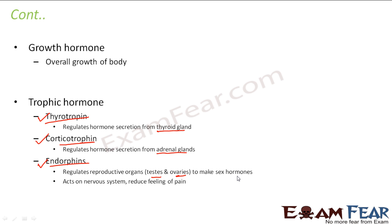Endorphins also act on the nervous system — they reduce the feeling of pain. When we get hurt, we feel a lot of pain, and that feeling is controlled by endorphins. Excessive feelings of stress and depression can also cause harm to our body, and these feelings of pain are controlled by the endorphin hormones. So those are the two categories: growth hormone and trophic hormone.